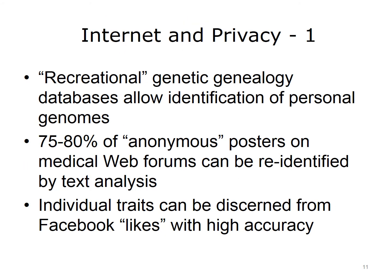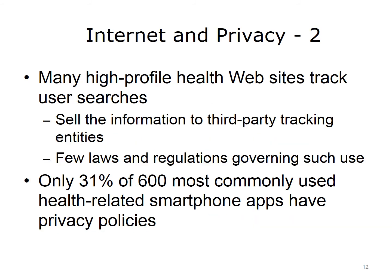The Internet may be particularly problematic for maintaining privacy. There are so-called recreational genetic genealogy databases that allow identification of personal genomes when that data is combined with other data such as age, name, and state. One analysis found that over three-quarters of those who post on medical web forums, who thought they were posting anonymously, could be re-identified by text analysis. Another well-known study looked at likes from various Facebook users and found that individual traits such as sexual orientation, political affiliation, personality types, and ethnicity could easily be gleaned from them. Many websites, including high-profile health websites, track user searches and sell that information to third-party tracking entities, usually for advertising or potentially for other purposes, and there are few laws and regulations that govern such use.